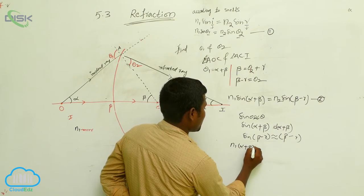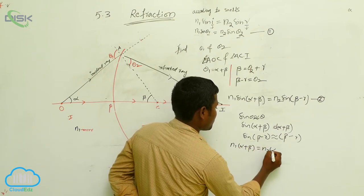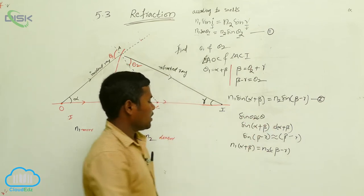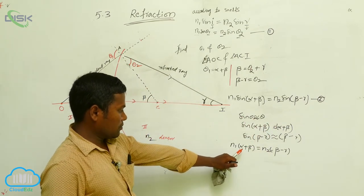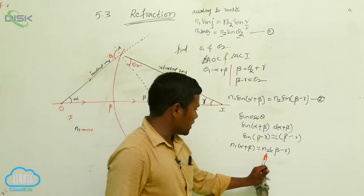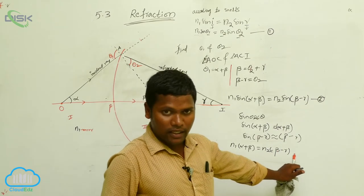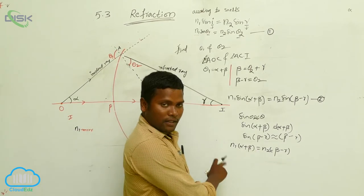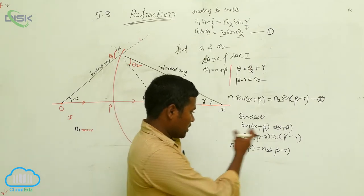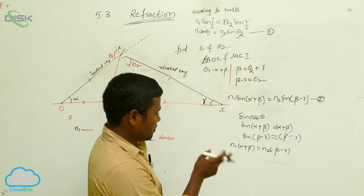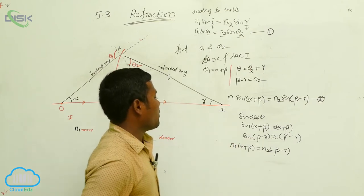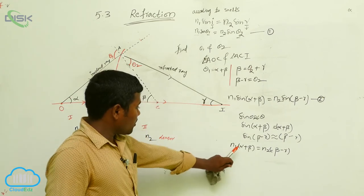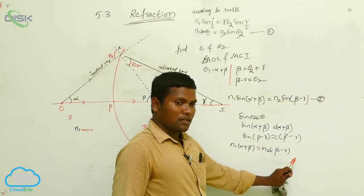Expanding: n1·α + n1·β = n2·β − n2·γ. The parameters here are α, β, and gamma. We need to find all three. There is no direct way to find α, β, and gamma from the diagram alone, so we need to consider a normal line at that point, which allows us to derive α, β, and γ.